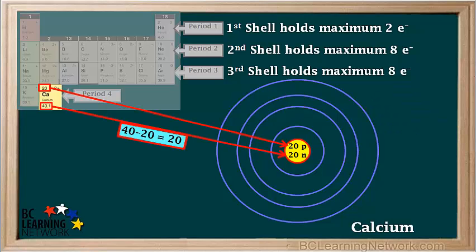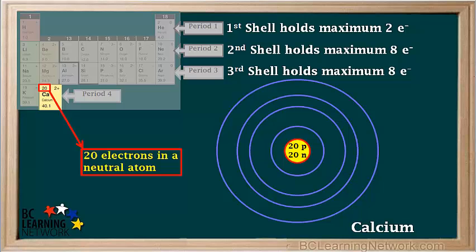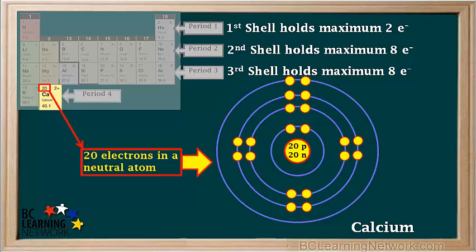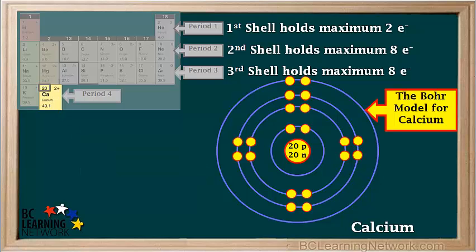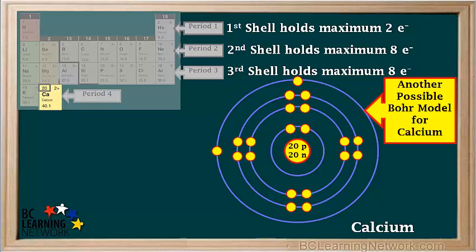Element number 20, calcium, has 20 protons and 40 minus 20, which equals 20 neutrons in its nucleus. A neutral calcium atom has 20 electrons, which could be arranged like this. So this is one possible Bohr model for calcium — the two electrons in shell number 4 form a lone pair. In another possible model, the two electrons in shell number 4 are unpaired and at right angles to each other. In yet another possible model, these two electrons are across from each other in the atom. All three of these models can be considered correct.